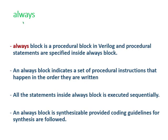Now let's learn what is an always block. An always block is a procedural block in Verilog, and procedural statements are specified inside the always block. The always block indicates a set of procedural instructions that happen in the order they are written — meaning the statements are executed sequentially.